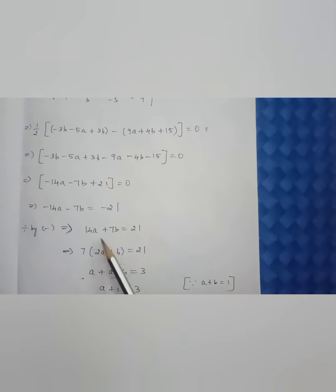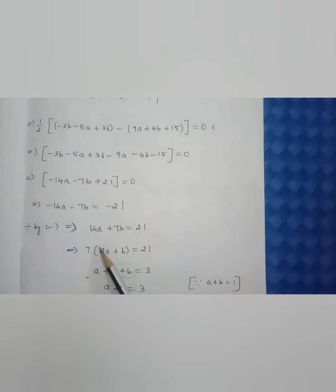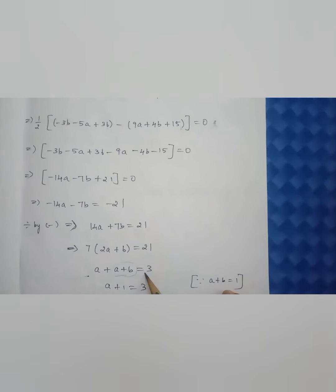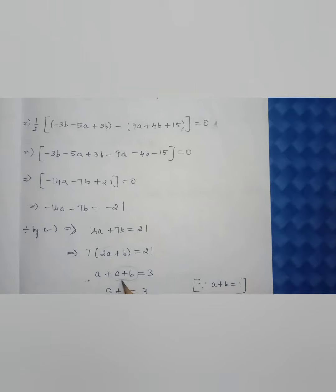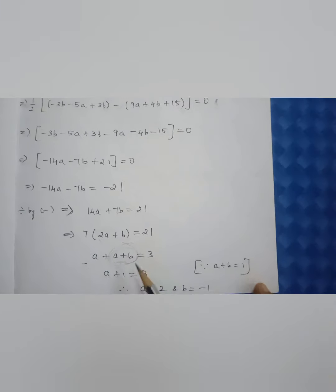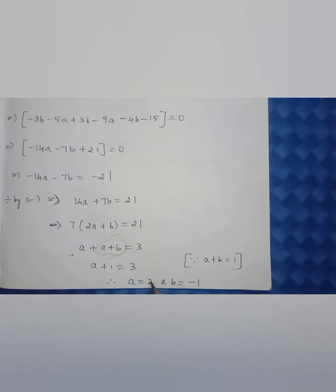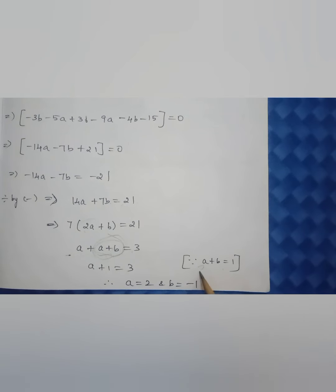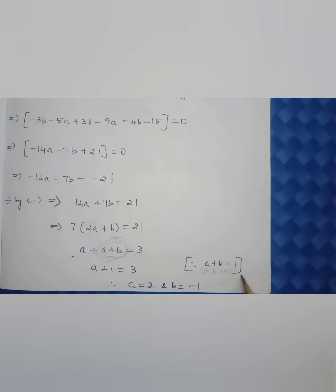Taking the minus sign outside gives 14a + 7b = 21. Factoring out 7: 7(2a + b) = 21, so 2a + b = 3. We can rewrite 2a as a + a, making it a + (a + b) = 3. Since a + b = 1 (given), substituting: a + 1 = 3, so a = 2. Substituting a = 2 into a + b = 1 gives 2 + b = 1, so b = −1. This is also a very important sum.